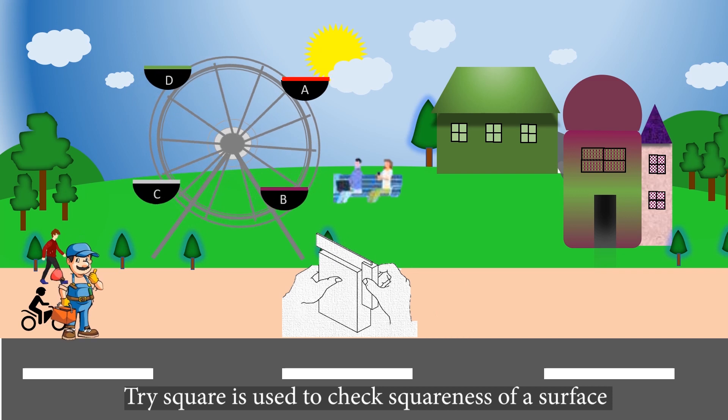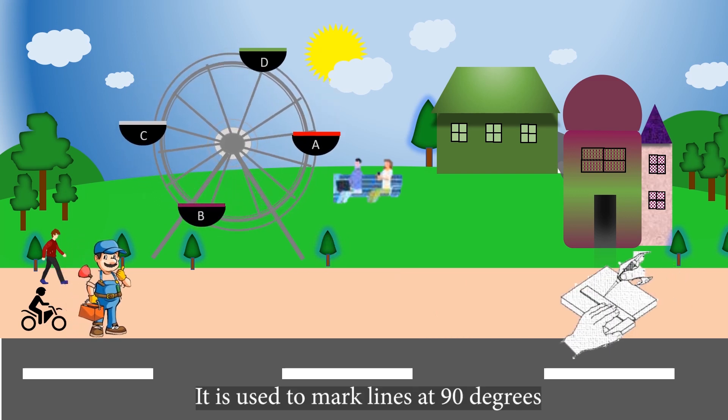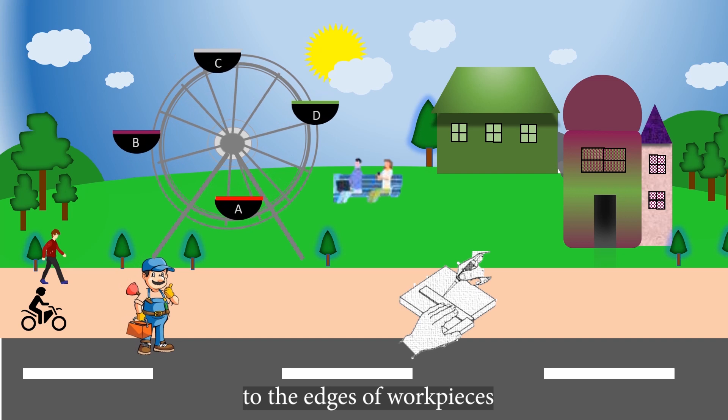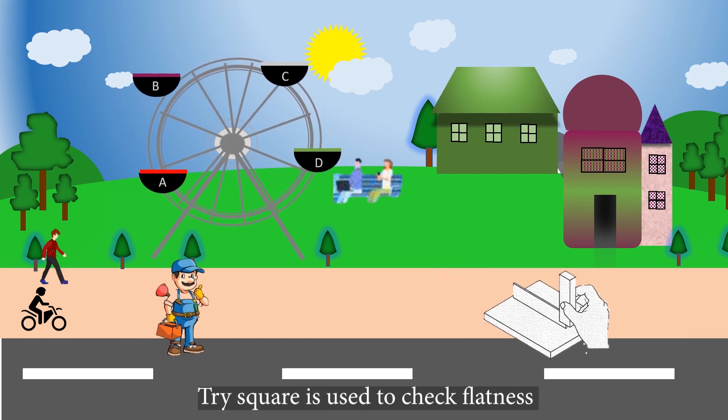Trisquare is used to check squareness of a surface. It is used to mark lines at 90 degrees to the edges of workpieces. Trisquare is used to check flatness.